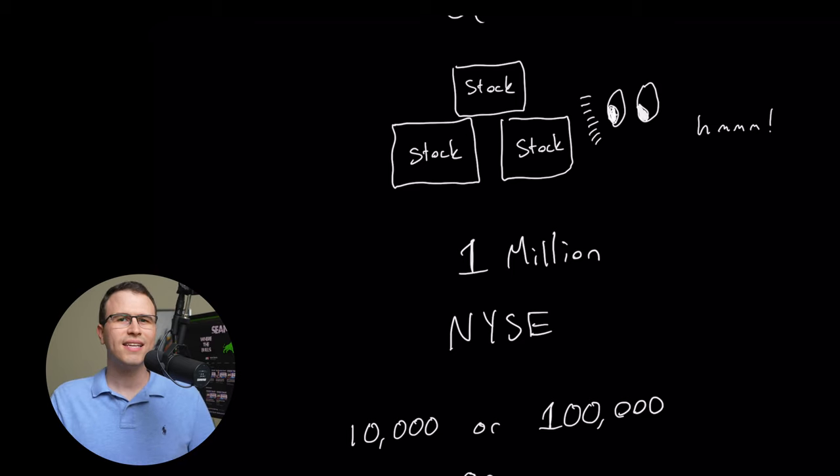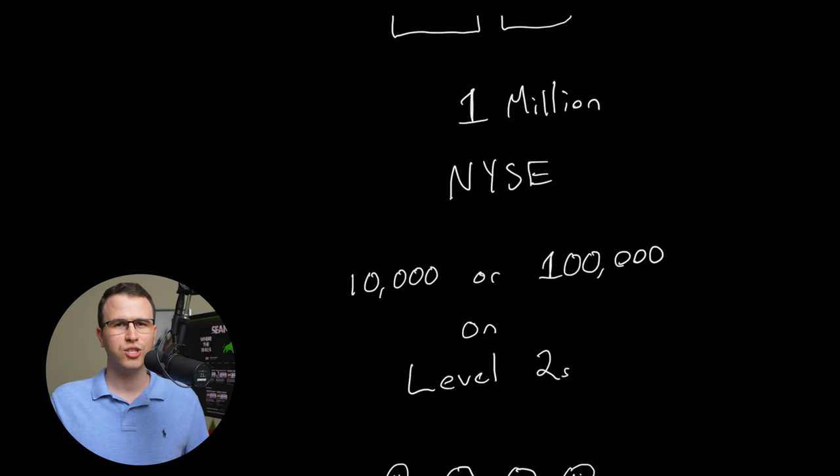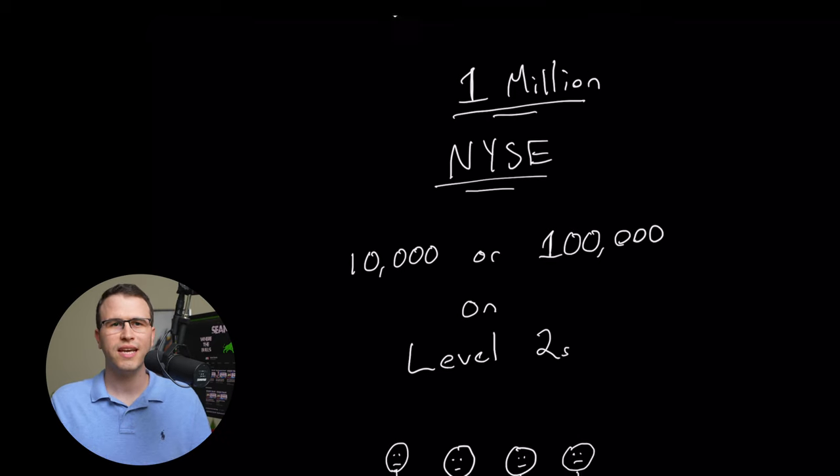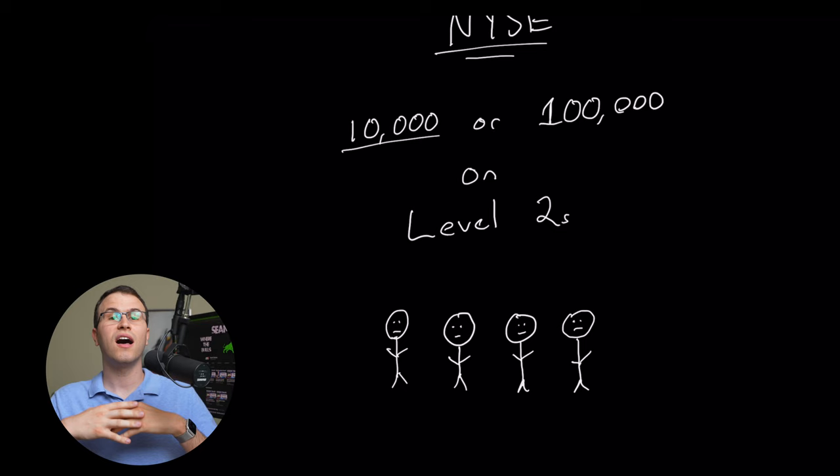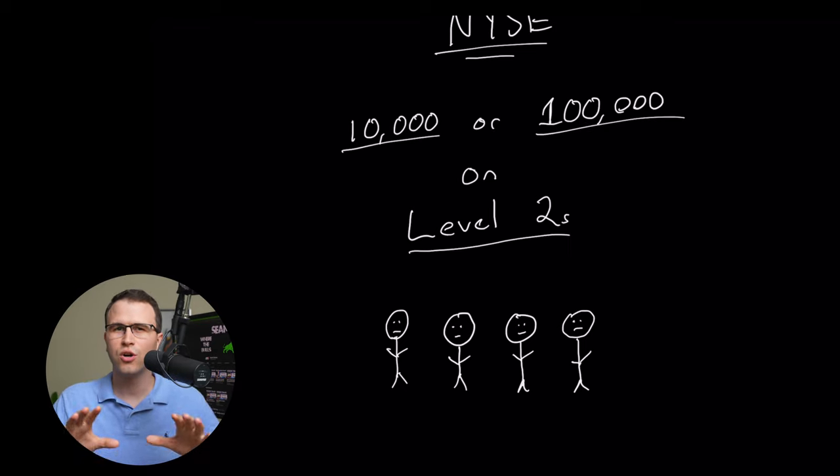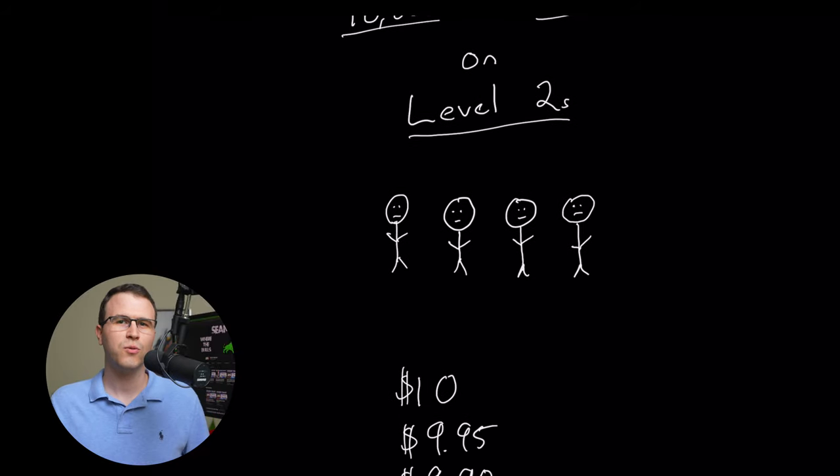So let's say that you want to sell 1 million shares of a stock and you do it on the New York Stock Exchange. If you did it there, people would start to take notice when they see walls of 10,000 or even 100,000 shares showing up on the level twos. This could hurt your goal because the market would react. Other people may start selling too.